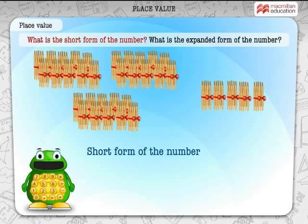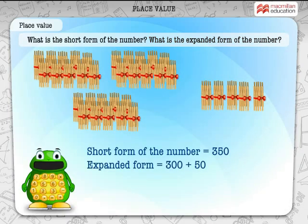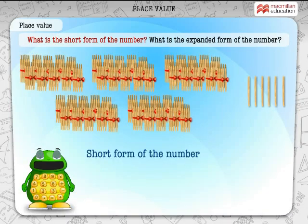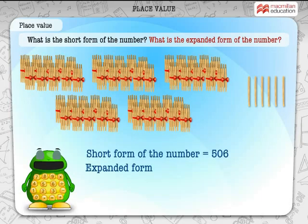What is the short form of the number? 350. What is the expanded form of the number? Expanded form of 350 is 300 plus 50. Absolutely. What is the short form of this number? 506 is the right answer. What is the expanded form of the number shown? Expanded form of 506 is 500 plus 6.